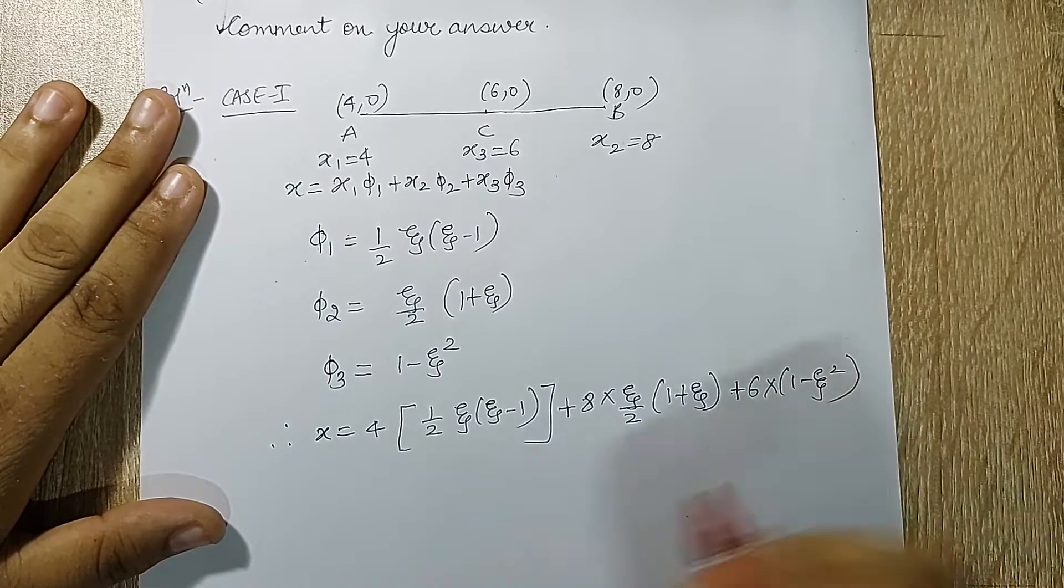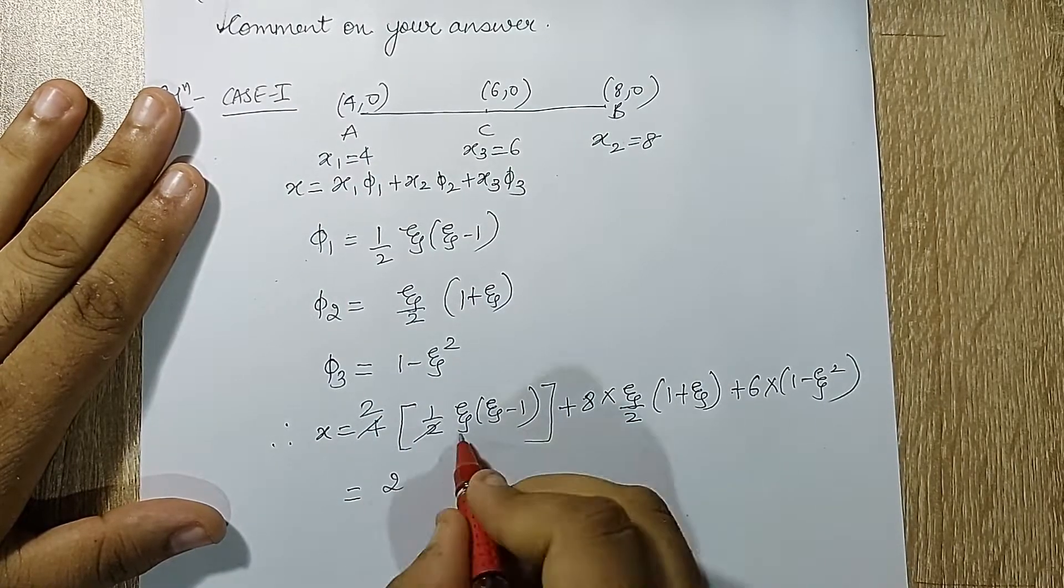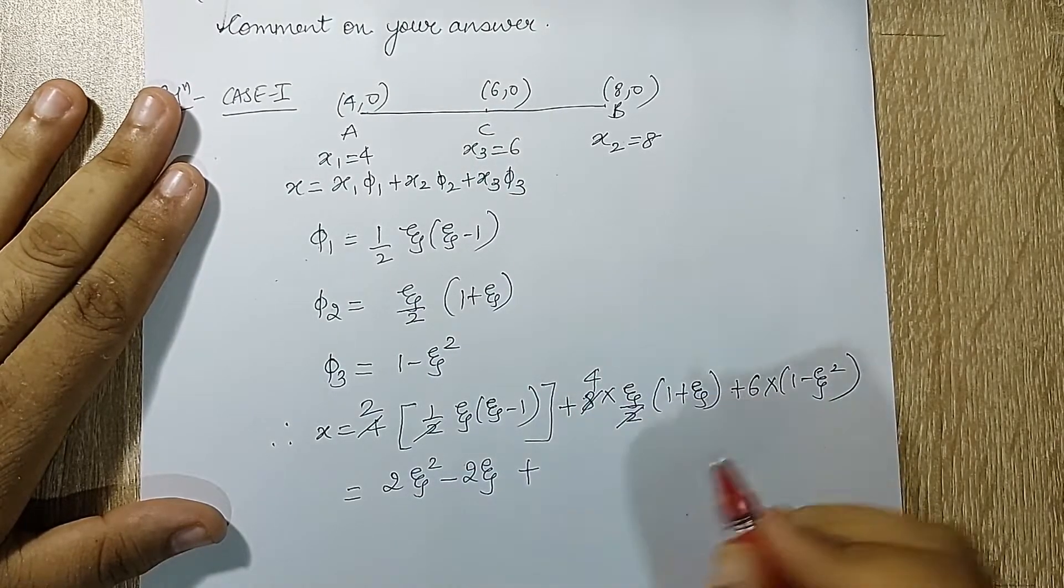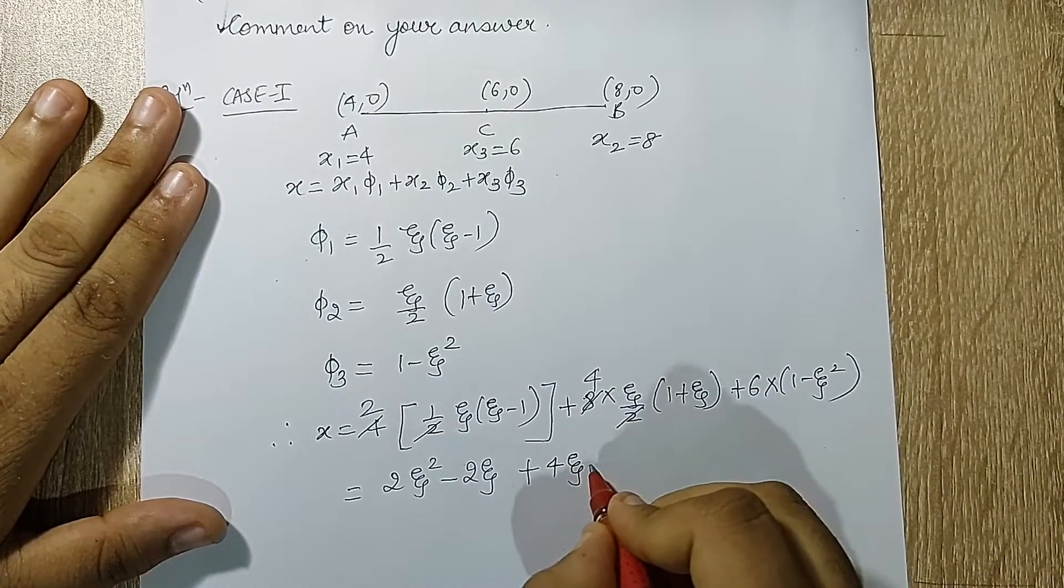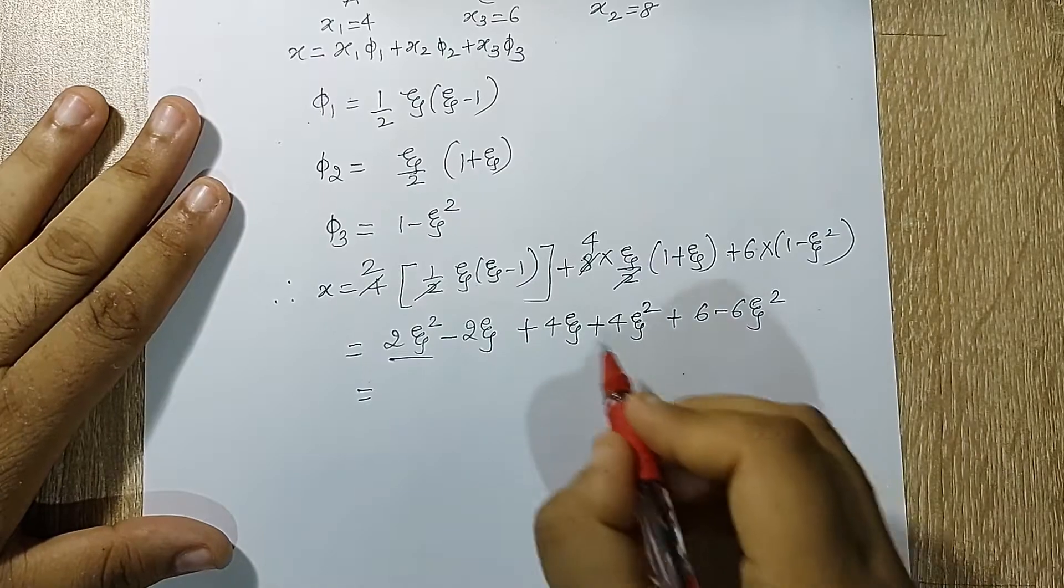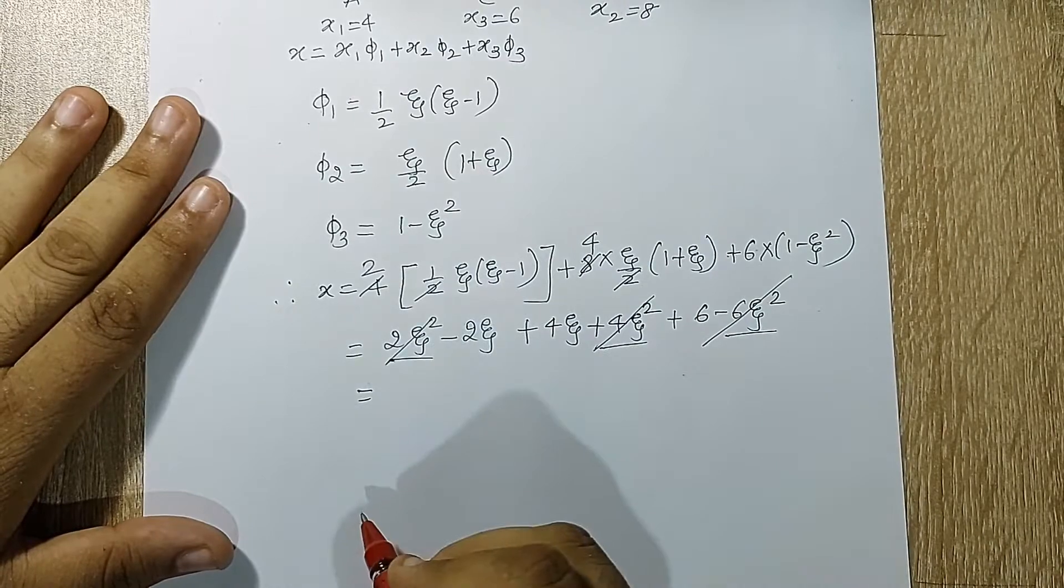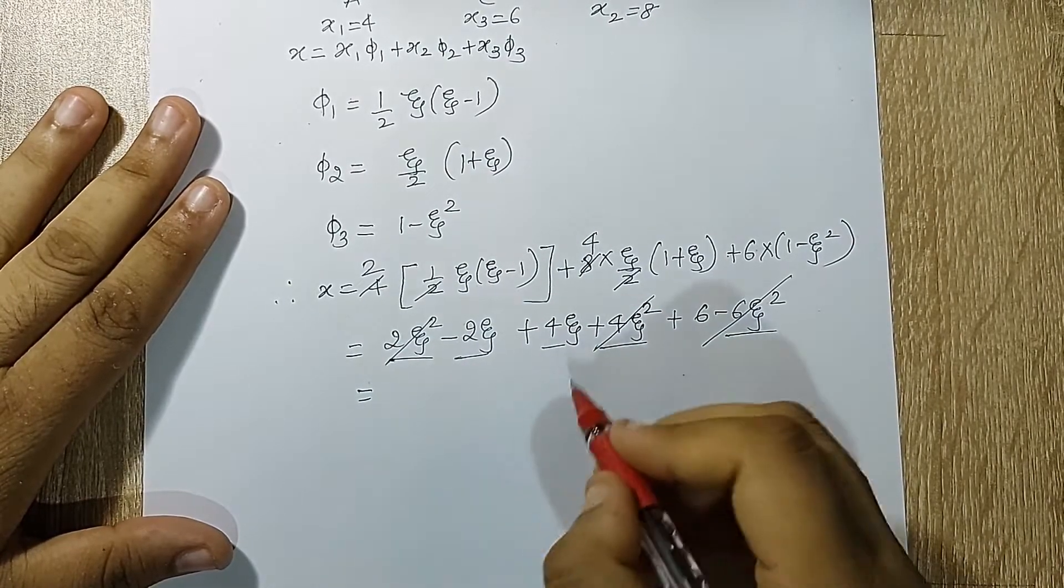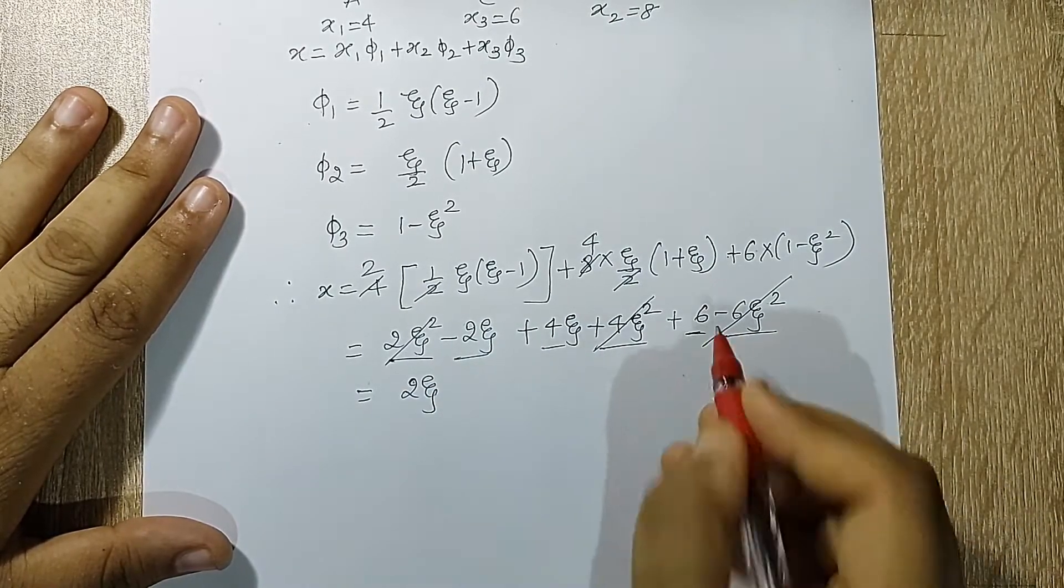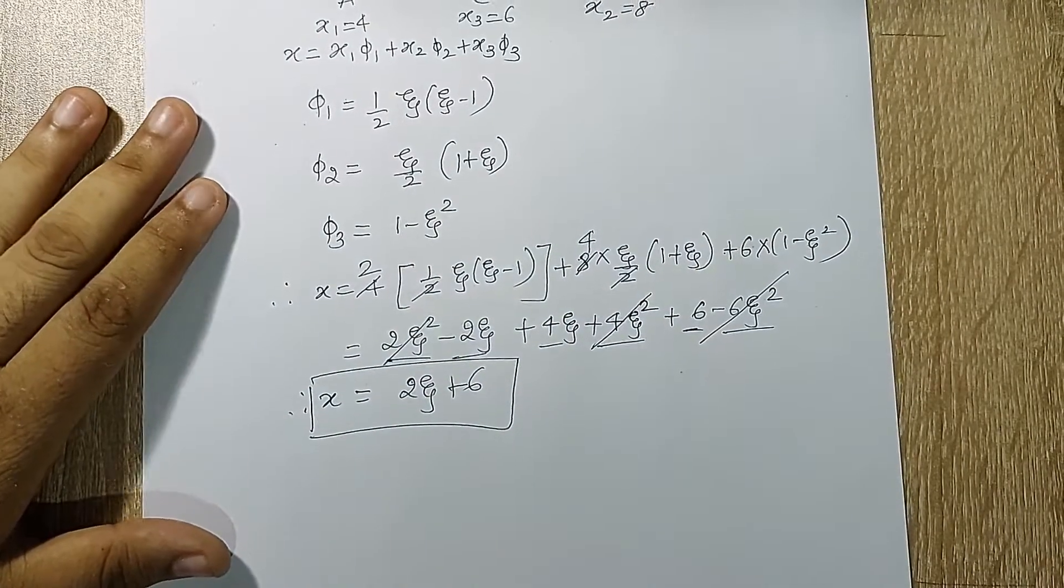Now let me open the brackets here. 2 gets cancelled so I have 2*zeta squared minus 2*zeta. Next I have 4*zeta + 4*zeta squared, and here I have 6 - 6*zeta squared. 2*zeta and 4*zeta add up to 6*zeta, and I have minus 6*zeta so they get cancelled out. Therefore my x in terms of zeta gives me x = 2*zeta + 6.